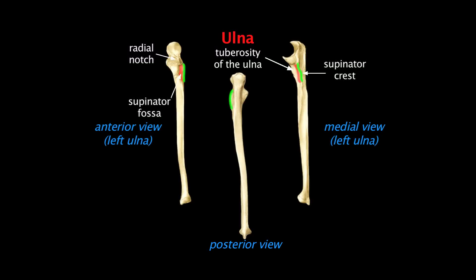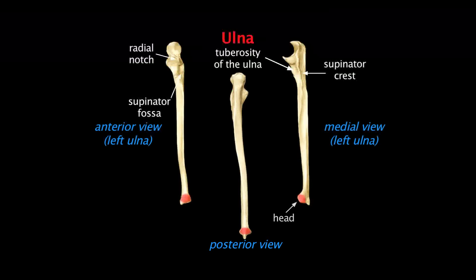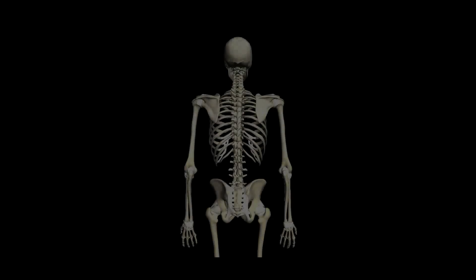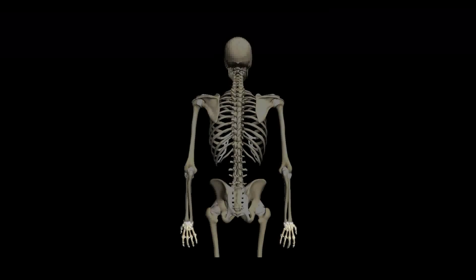At the distal end of the ulna, we have the head of the ulna and another conical styloid process off its medial edge, as opposed to the styloid process of the radius, which comes off its lateral edge.